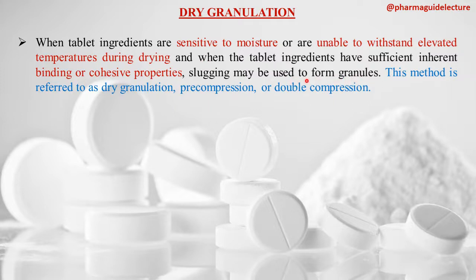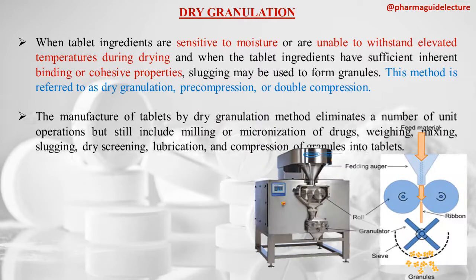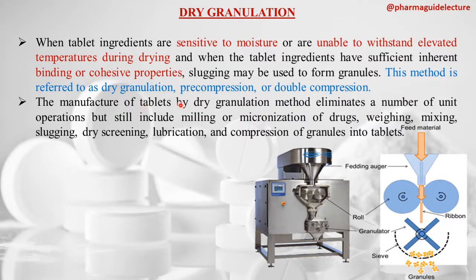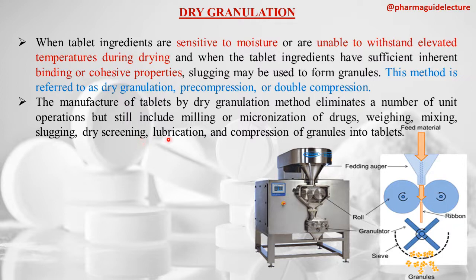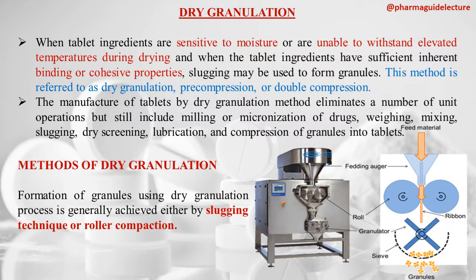In dry granulation, slugs are first formed and then broken down into granules. This method is also called pre-compression or double compression. Steps include: milling or micronization of drugs, weighing, mixing, formation of slugs, breaking of slugs into granules, dry screening of granules, lubrication, and finally compression into tablets.